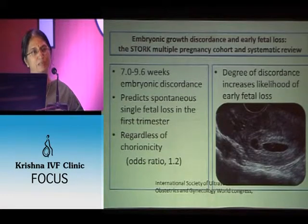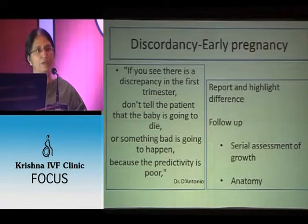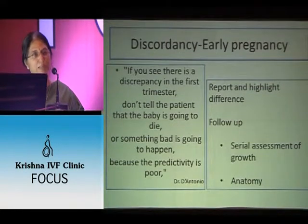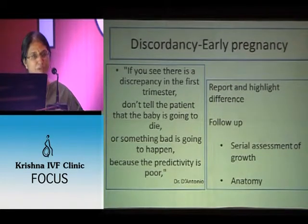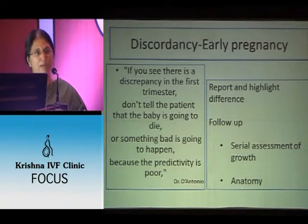The degree of discordance decides embryonic loss. So in early pregnancy, if you have a discordance, what do we tell this mother? You do not tell the patient that the baby is going to die or something bad is going to happen, because the predictivity is poor. So you just keep a watch.